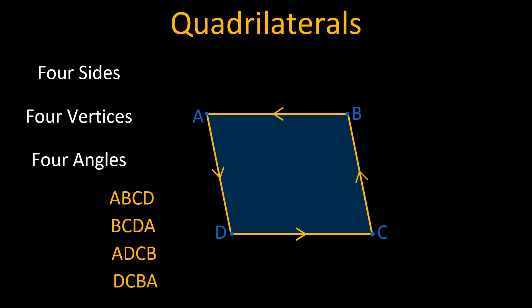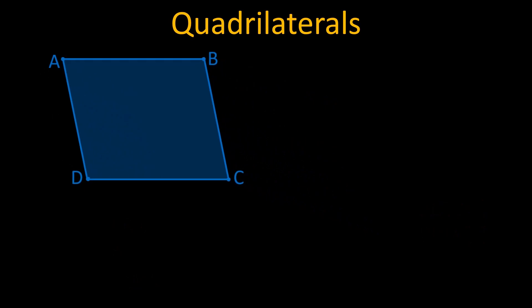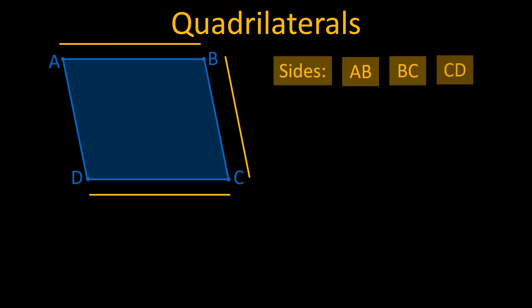It cannot be named as polygon ACBD or polygon DBAC since they change the order of vertices in which a quadrilateral is formed. The four sides of quadrilateral ABCD are AB, BC, CD and DA.